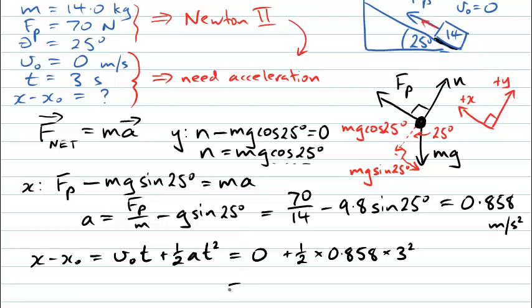But in fact what I should do is remember that I can only give this answer really to two significant figures. So 3.86 to two significant figures will become 3.9 metres. And that's how far the block moved up the incline in the first three seconds.